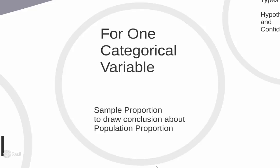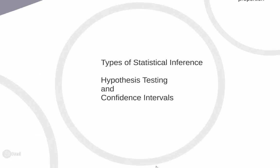There are two main types of statistical inference: hypothesis testing and confidence intervals. Confidence intervals create an area you hope the population parameter will be contained within, whereas a hypothesis test asks a specific question about a population parameter. In the context of one categorical variable, a hypothesis test would ask a question about p, and a confidence interval will create an area we hope p is contained within.